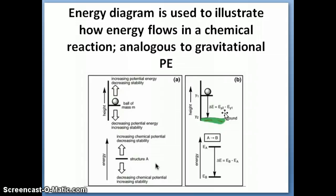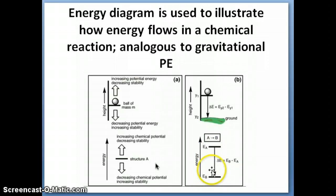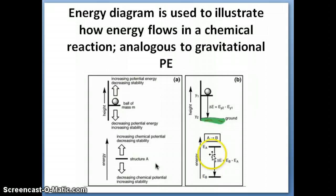We apply the same idea to molecules. If we have molecules A and B, where A is the reactant and B is the product, and A converts to B, then delta E equals the energy of B (final) minus the energy of A (initial). If B is lower in energy than A, you get a negative delta E for that reaction.